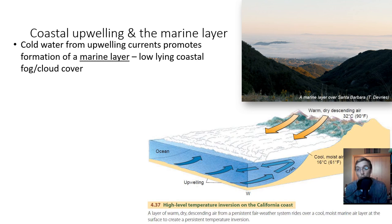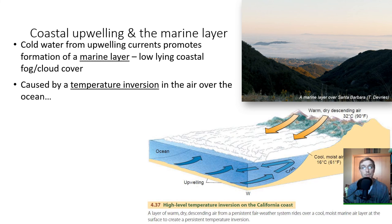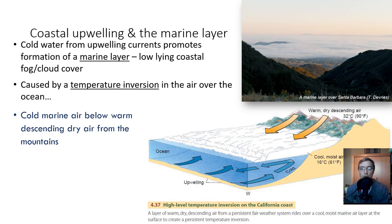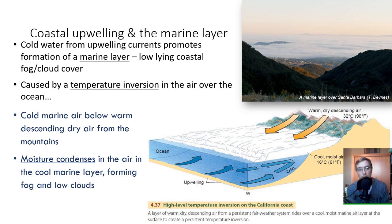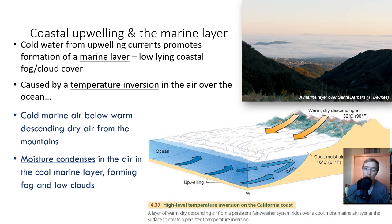Cold water from upwelling currents promotes the formation of a marine layer — a low-lying coastal fog or cloud cover layer. This is caused by a temperature inversion: cold marine air below, warm descending dry air from above. As moisture condenses in the cool marine air, the marine layer forms, creating fogs and low clouds. You can see this in images of the marine layer over Santa Barbara. A fun fact: 'Karl' is the name given to the fog — the marine layer — that rolls in and out of the San Francisco Bay area.